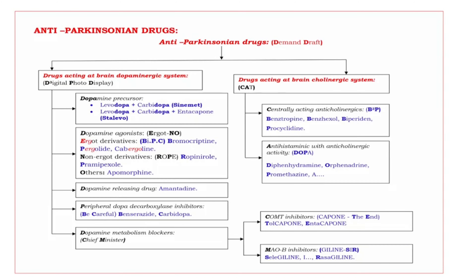Next, when we come to the classification, anti-Parkinsonian drugs are divided into two groups. The mnemonic is 'Demand Draft,' where the bold letters are D and D. One D is drugs acting at the brain dopaminergic system, and the second D is drugs acting at the brain cholinergic system.